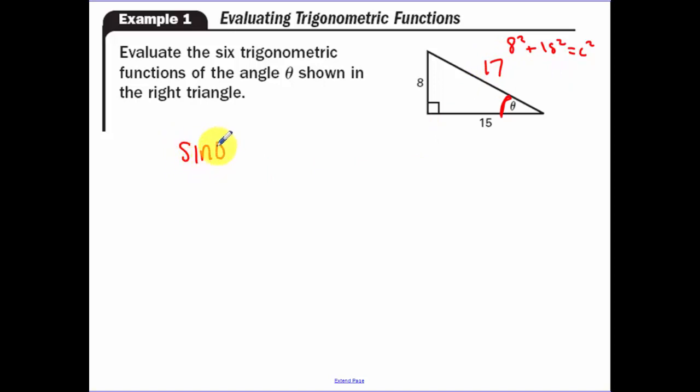So I set up my chart. Sine, and then right across from it, set up its reciprocal, cosecant. Cosine, its reciprocal secant. And then tangent and cotangent.